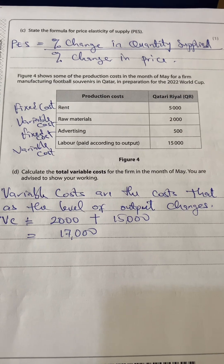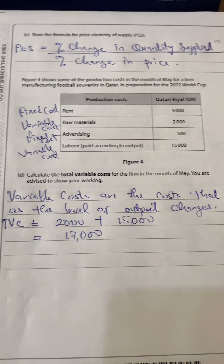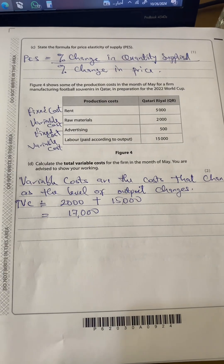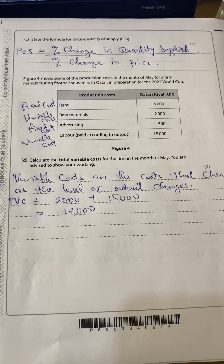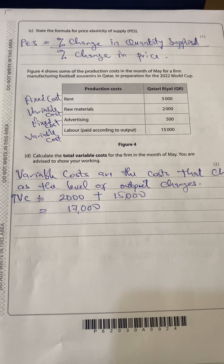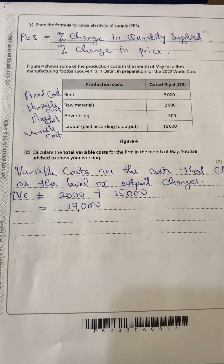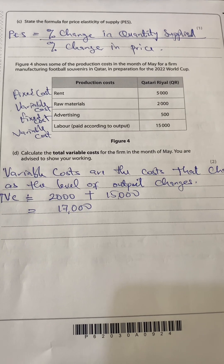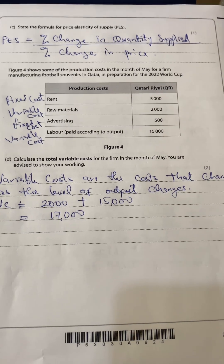Question D: calculate the total variable cost for the firm in the month of May. Variable costs are costs that change as the level of output changes. From the data, rent is a fixed cost, raw materials are a variable cost, advertising is a fixed cost, and labour cost is also a variable cost. Therefore, our total variable cost is raw materials plus cost of labour, which equals 17,000.